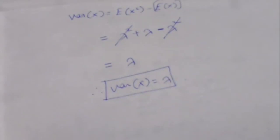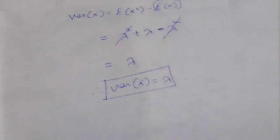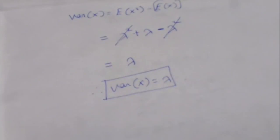So variance equals lambda and mean equals lambda. Therefore in the Poisson distribution, mean and variance are equal — and this is the only distribution in which mean and variance are equal. Practice well, all the best, thank you children.